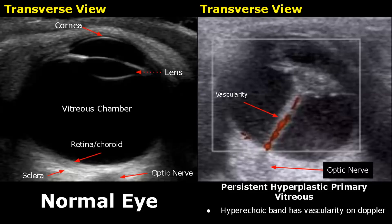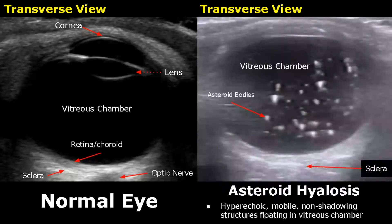In asteroid hyalosis, small hyperechoic mobile non-shadowing structures will be seen floating in the vitreous chamber.